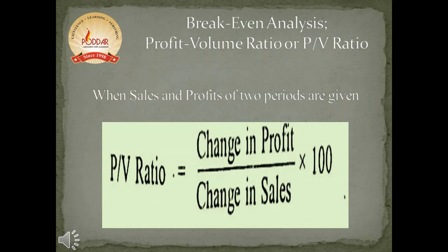PV ratio is also calculated using sales and profit figures from two different periods, where the two periods may represent years, months, or weeks. In this case, PV ratio equals change in profit divided by change in sales, whole multiplied by 100. Please note that 'change' here represents the present period minus the previous period.